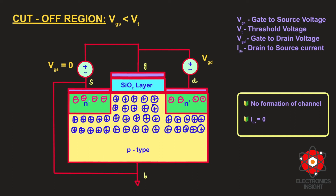One PN junction is between the source and the bulk, and the other is between the drain and the bulk. When VGS is zero, the source is connected to ground and the bulk is also connected to ground, so the PN junctions between the source-bulk and drain-bulk regions are going to be completely zero-biased. When zero-biased, the source and drain are electrically insulated due to the absence of a conducting channel between them — there is no formation of channel.